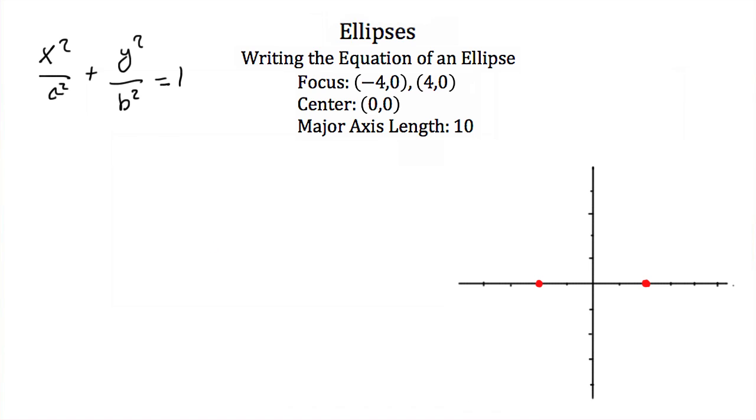So if I have a major axis vertex here and here the distance between these is 10. That means that the distance from this vertex to our center is 5. It also means that that distance is a. So using this information we found our a value, a is equal to 5.